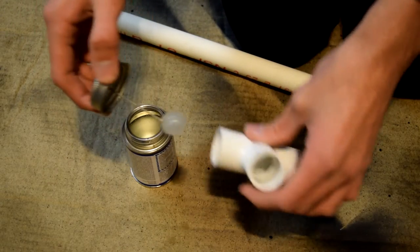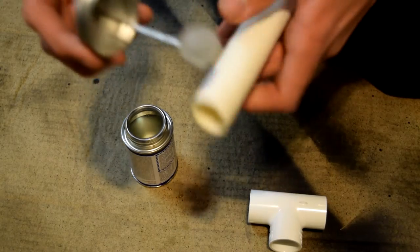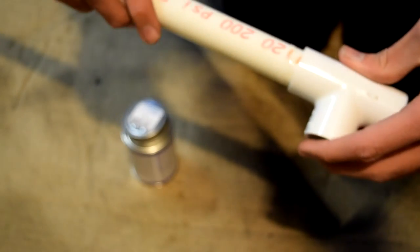Glue the T-joiner to the 10 inch piece, like this. Then the two 5 inch pieces in the other holes.